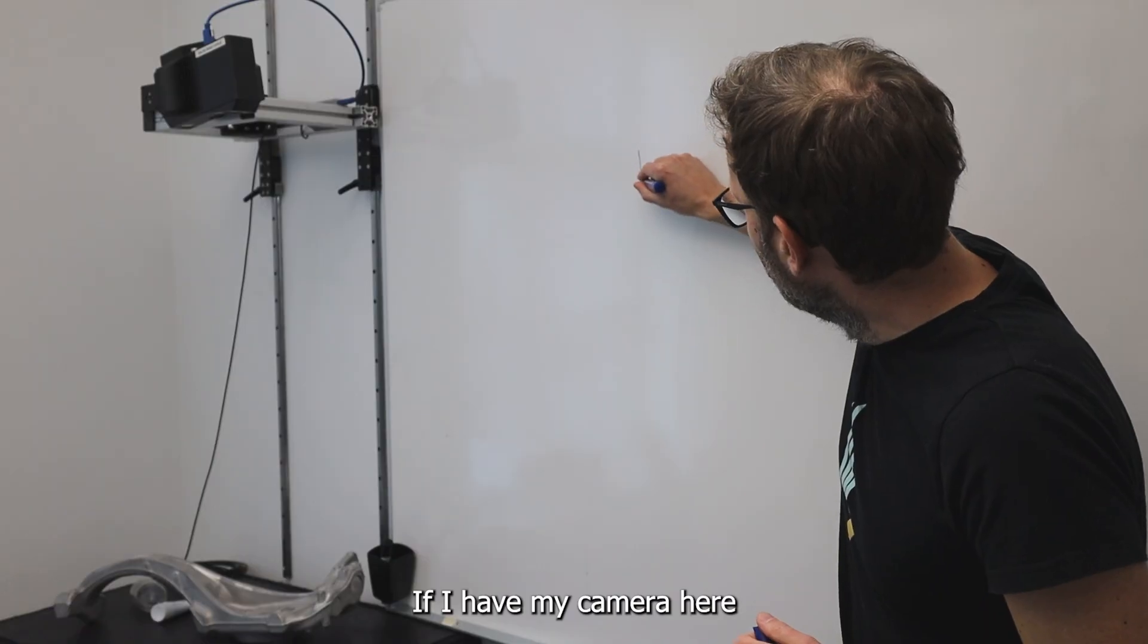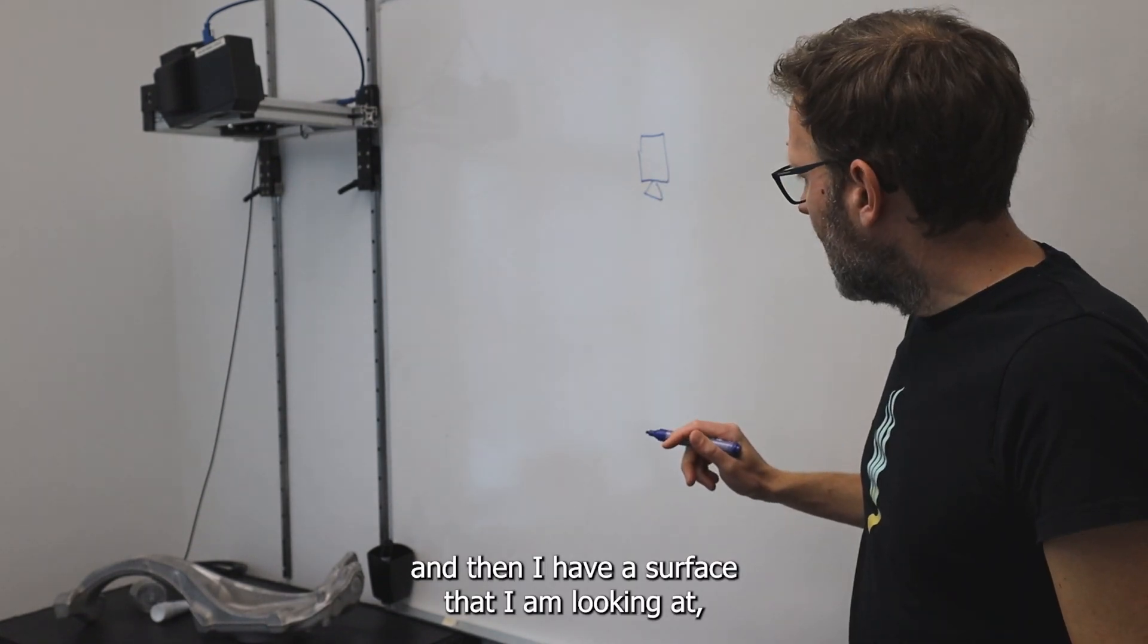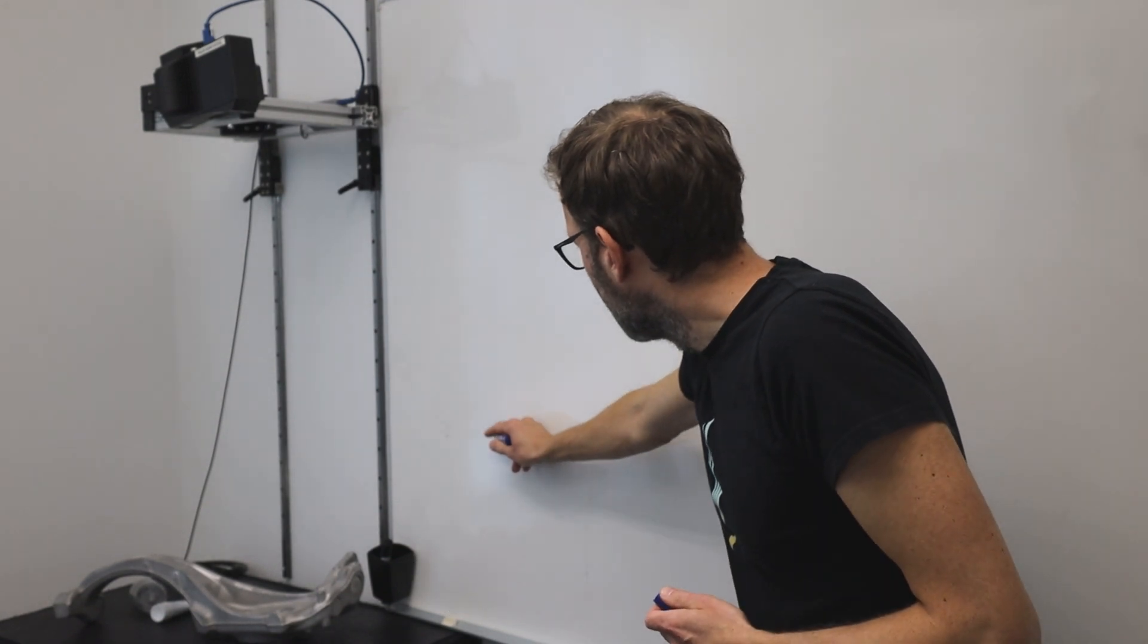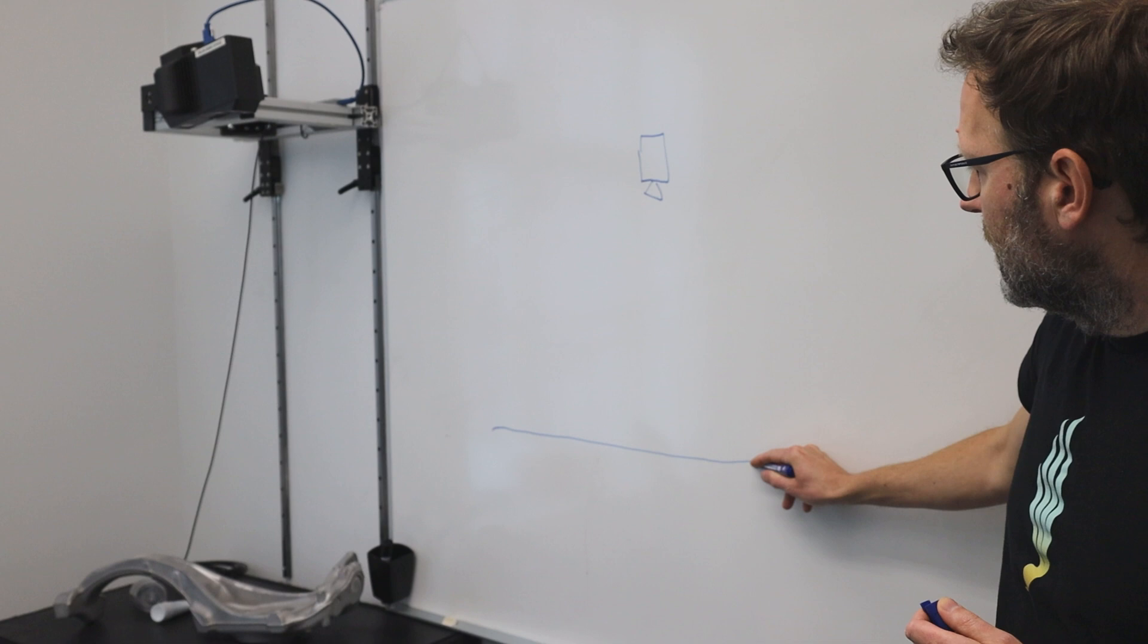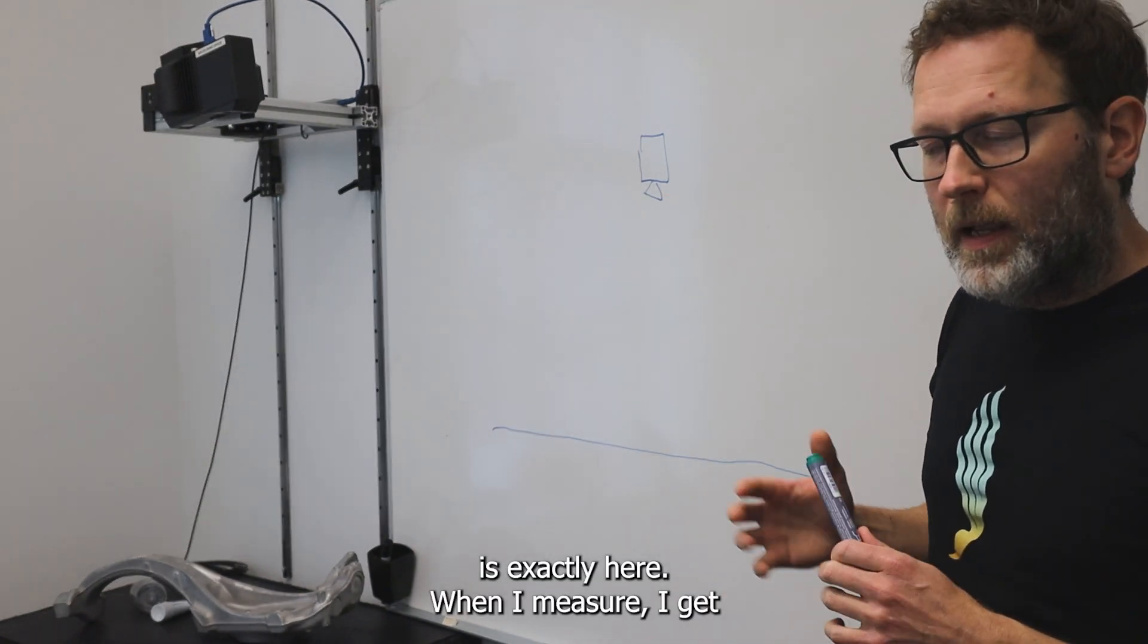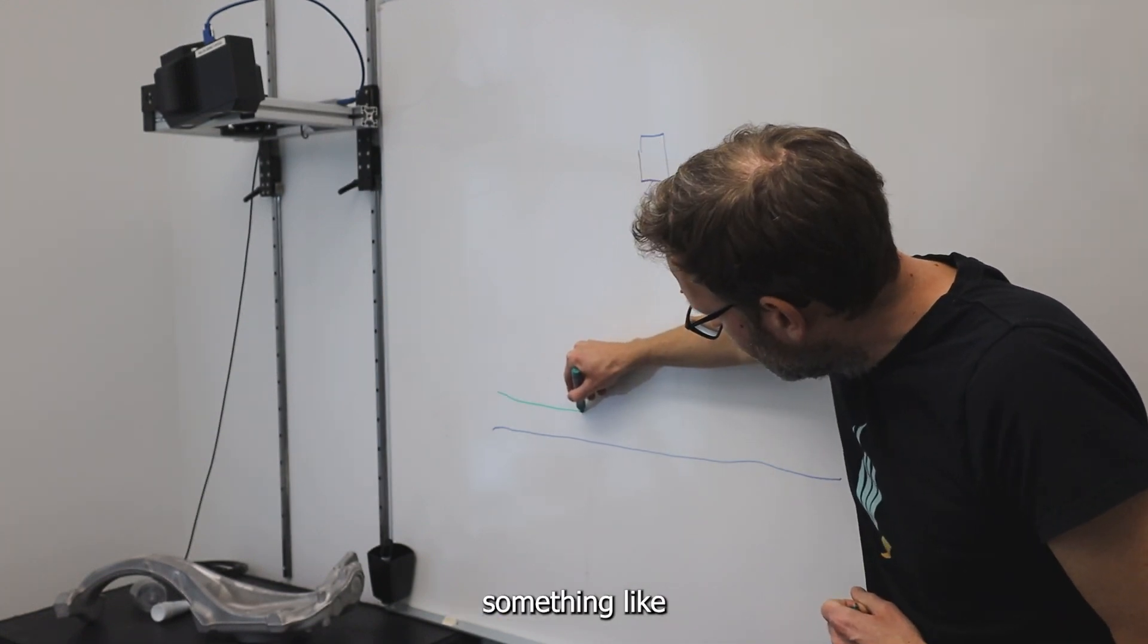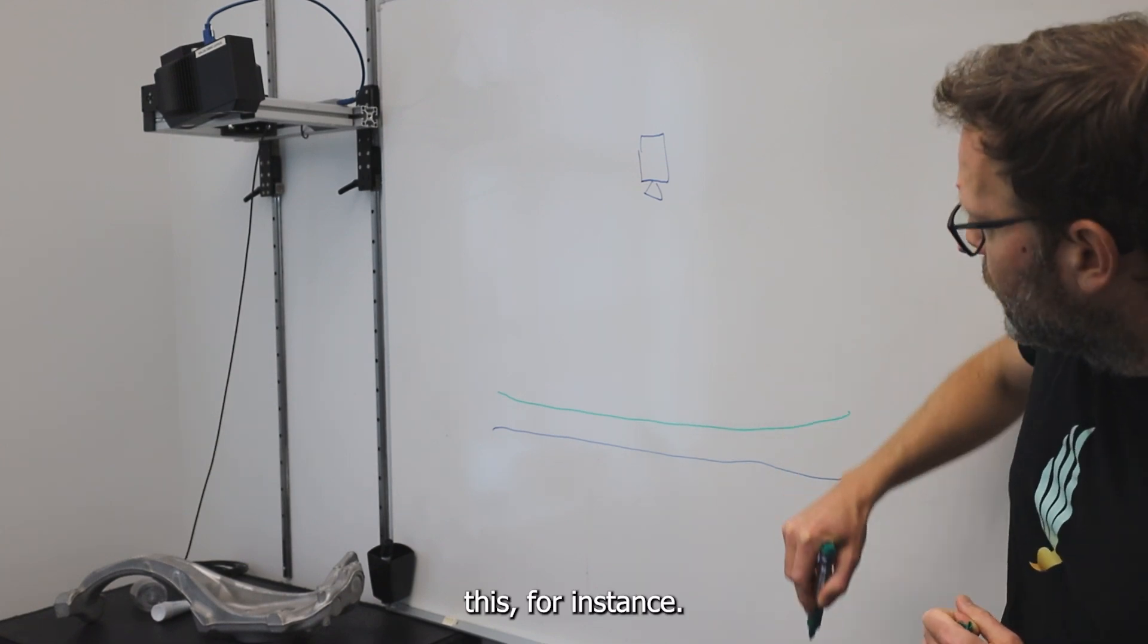If I have my camera here, and then I have a surface that I'm looking at, and now just think that this surface is exactly here. When I measure, I get something slightly off, something like this for instance.